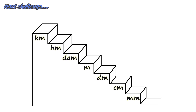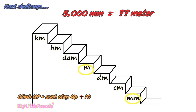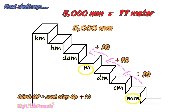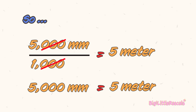Easy, right? Now let's try another challenge. 5,000 millimeters is how many meters? First, find where is the millimeter — there it is. Then find the meter. You need to jump up from millimeter to meter. Remember the formula: as you are climbing up, each step you jump up, you need to divide by 10. One, two, and three jumps. So 5,000 millimeters divided by 10, by 10, and by 10 — it gives you 5 meters.